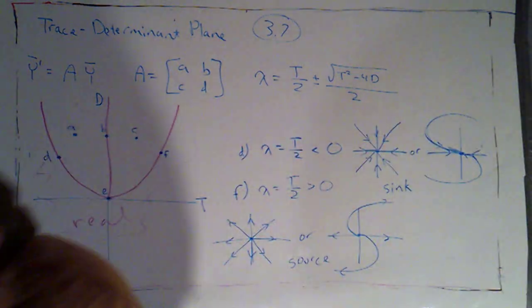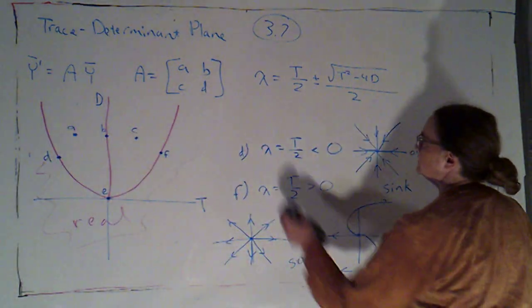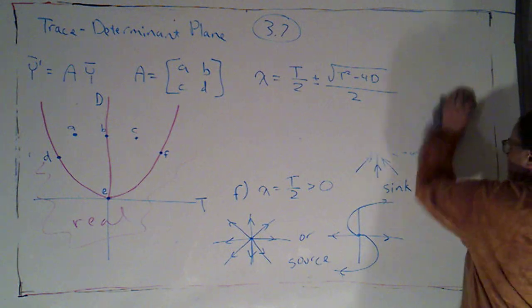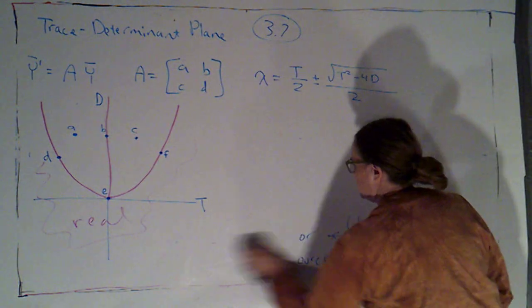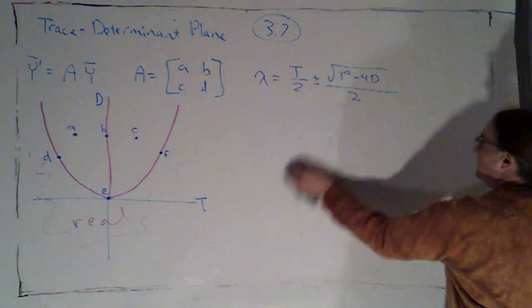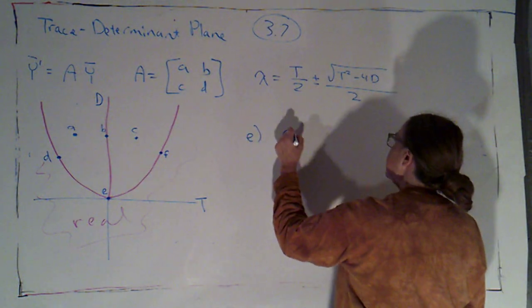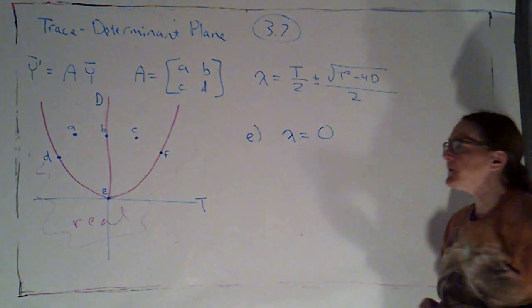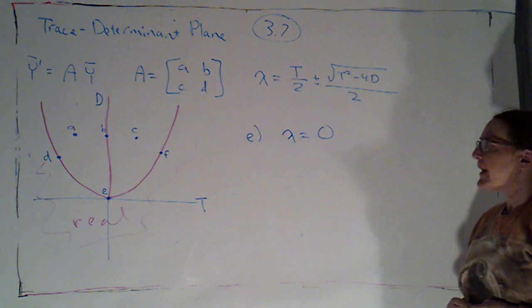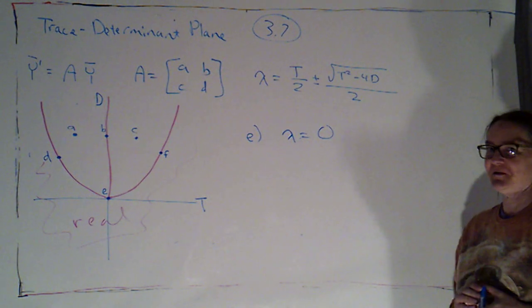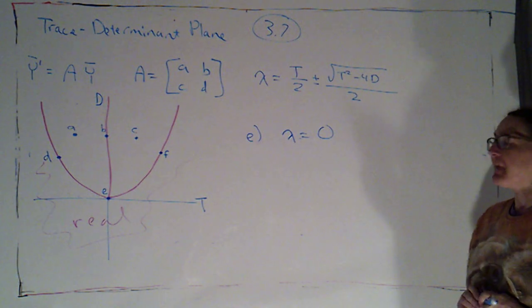So, let's take a look now at e. If I look at e, lambda equals 0 is my only equilibrium solution. This is exciting.